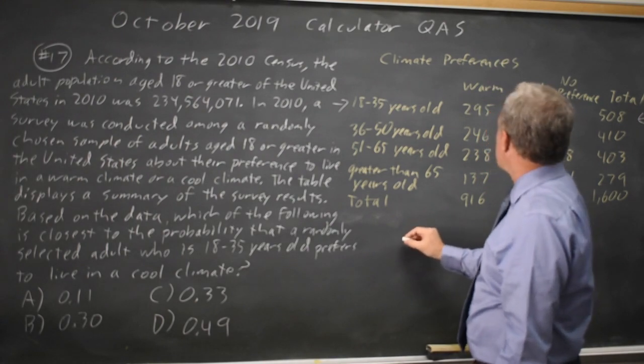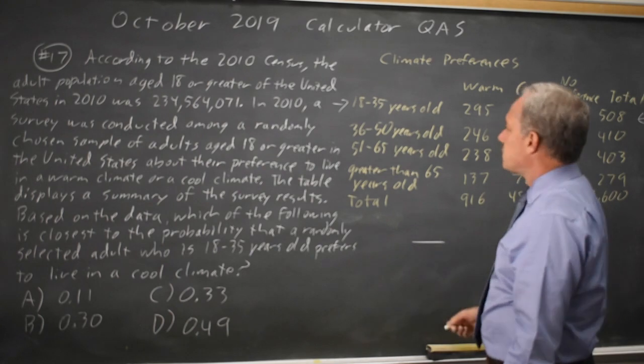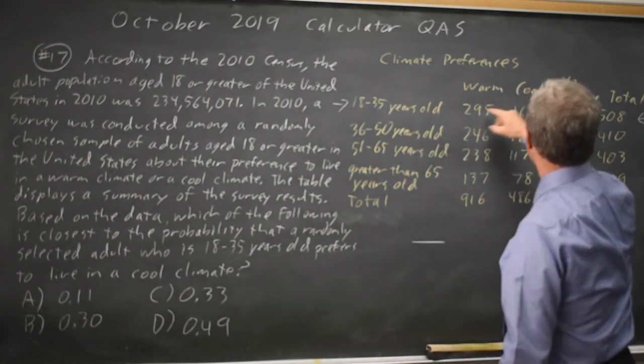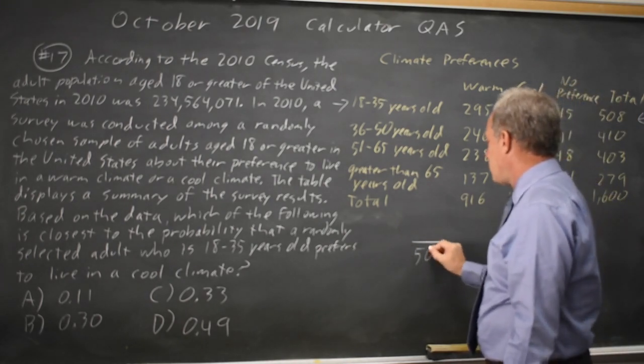So your numerator is those who are in that row who like cool. Your denominator is all individuals you might have chosen. So your denominator is all individuals 18 to 35, which is 508.